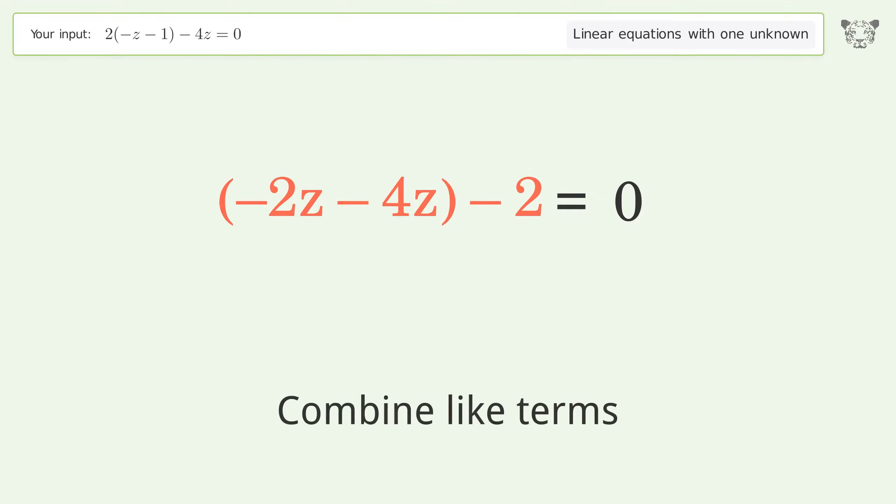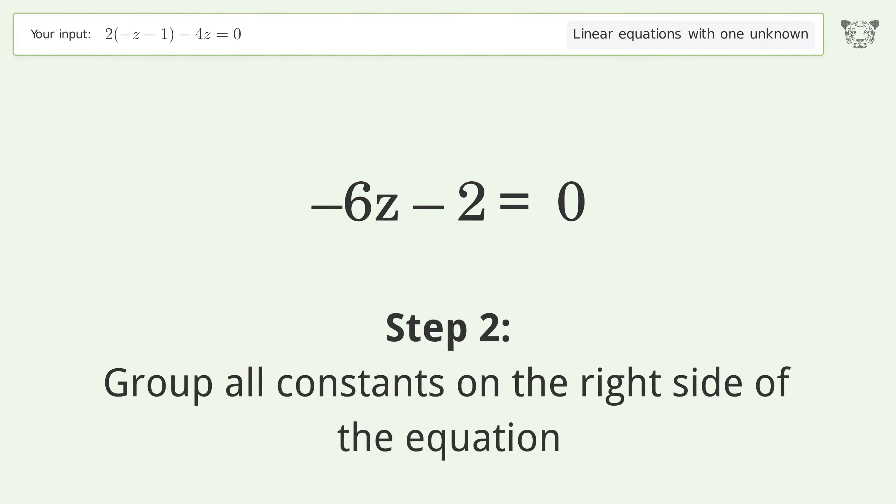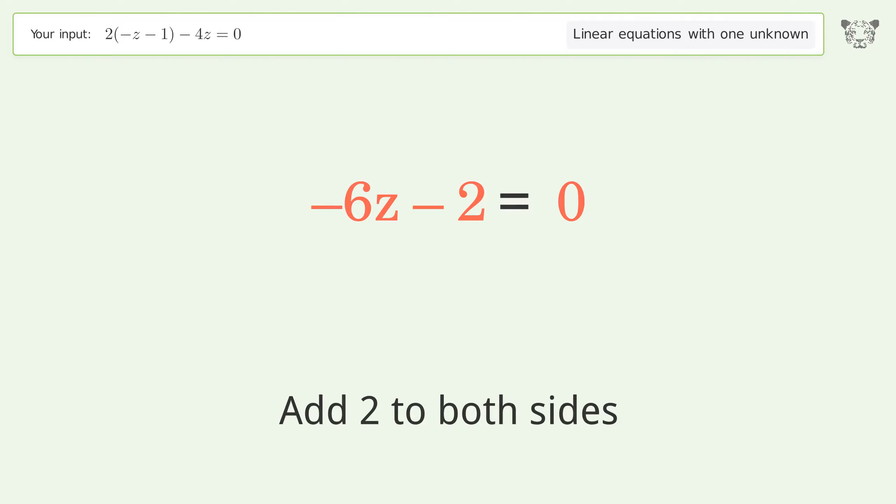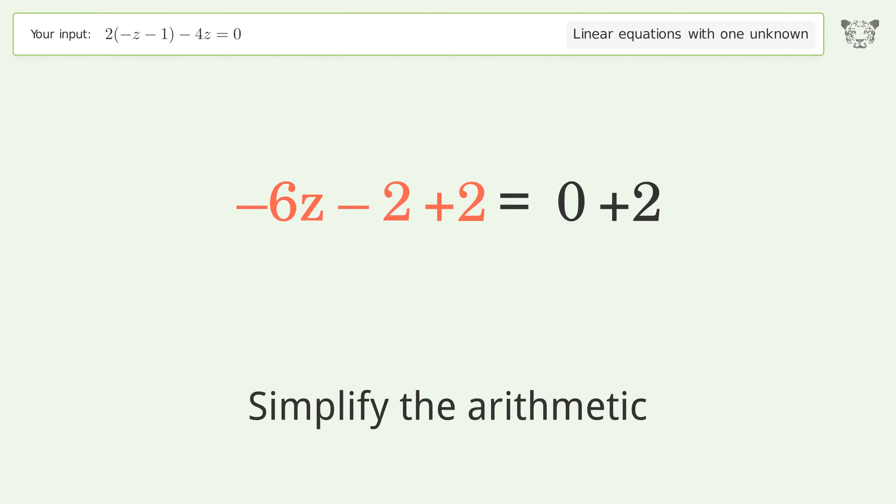Group like terms and combine them. Group all constants on the right side of the equation. Add 2 to both sides and simplify the arithmetic.